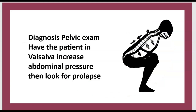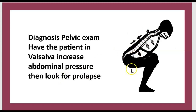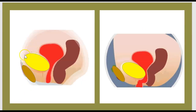How to make the diagnosis: perform a pelvic exam — have the patient perform the Valsalva maneuver to increase abdominal pressure, then look for prolapse. Compare a normal bladder versus a cystocele.